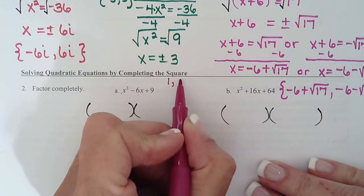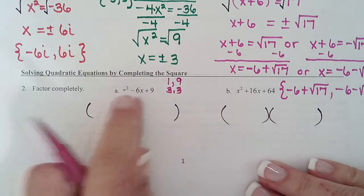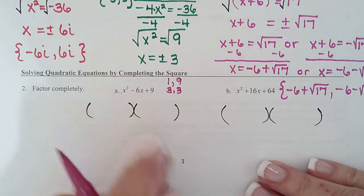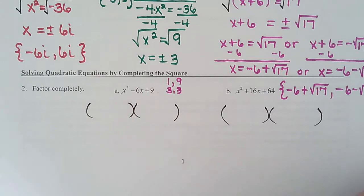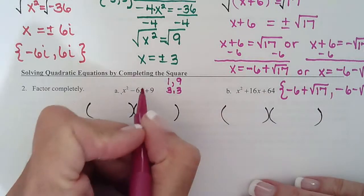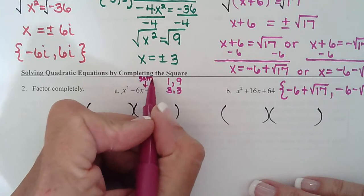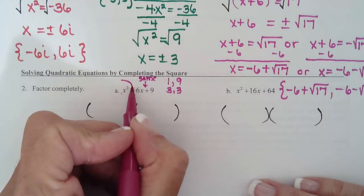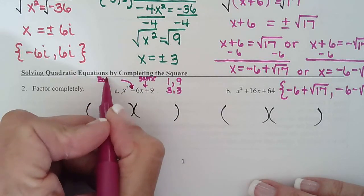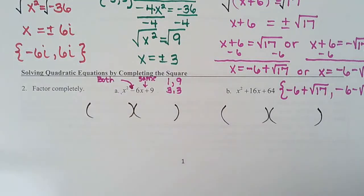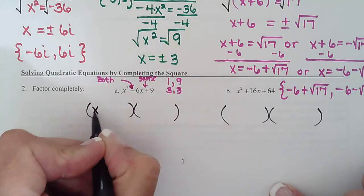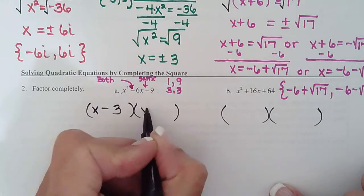Now we're looking for factors of 9, 1 and 9, 3 and 3 that add to 6. So I can tell it's going to be 3 and 3. Now I need to decide the signs. Remember a plus at the end means they'll be the same. And this tells us what they'll both be. So they're both going to be negative, x minus 3, x minus 3.